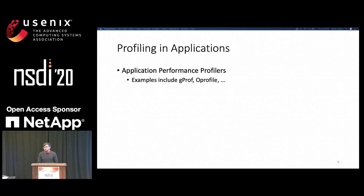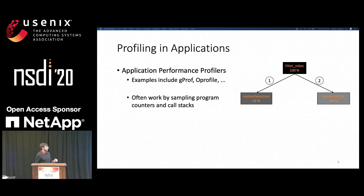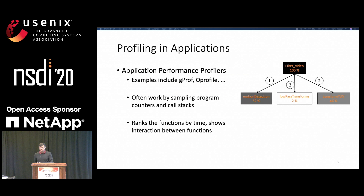The most common of these follow a very similar workflow, where during the execution of the program, the profiler periodically samples the program counter and call stacks to find out statistically which functions or control flows are most common in the program. For example, this is the output of GPROF for a program named filter video. It calls three different functions. The colors and the numbers represent how much time is spent in each function, including sub-functions. A darker color represents time spent in each function. The output gives an application developer an idea of where to focus their efforts to improve their programs.